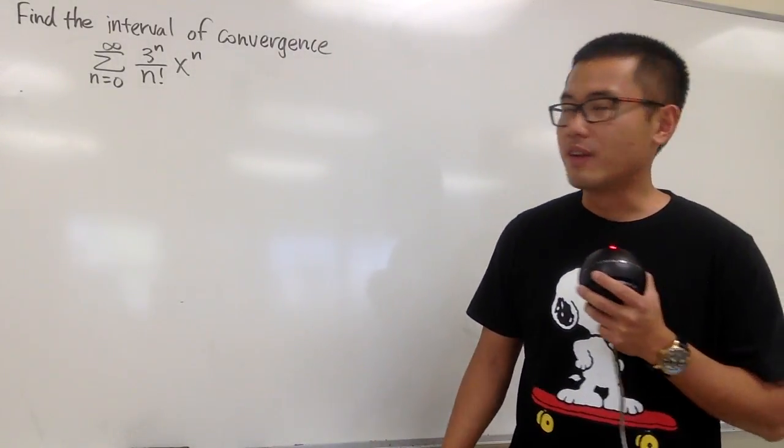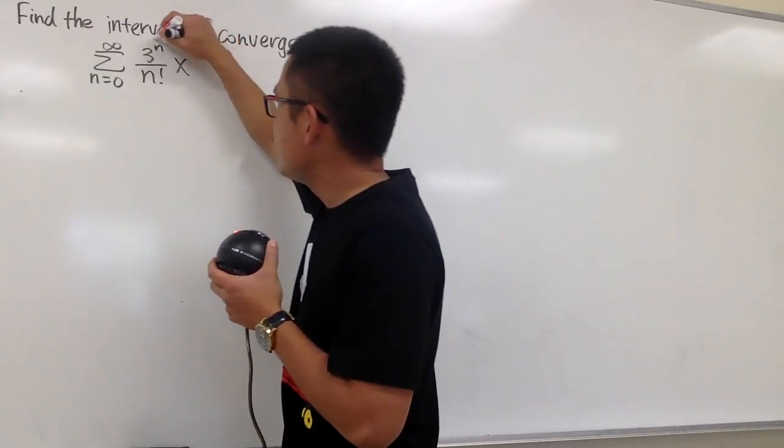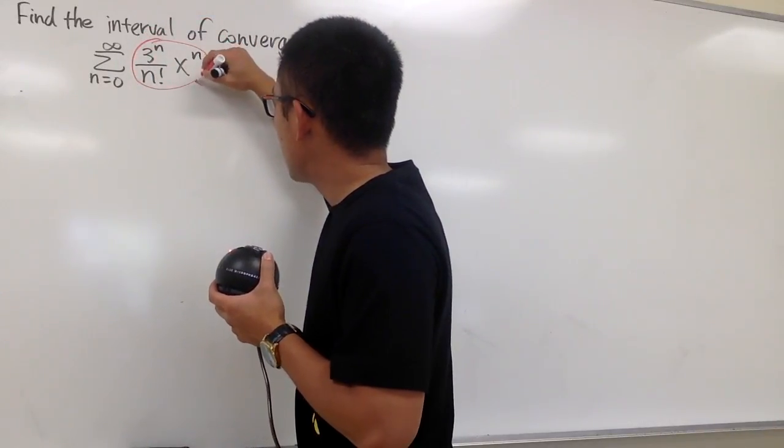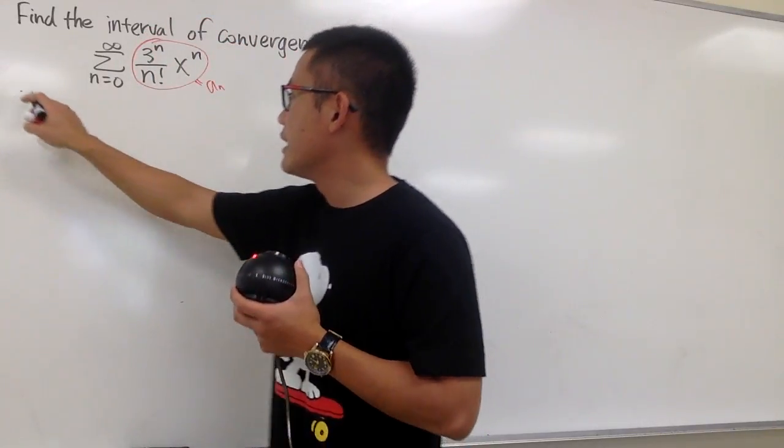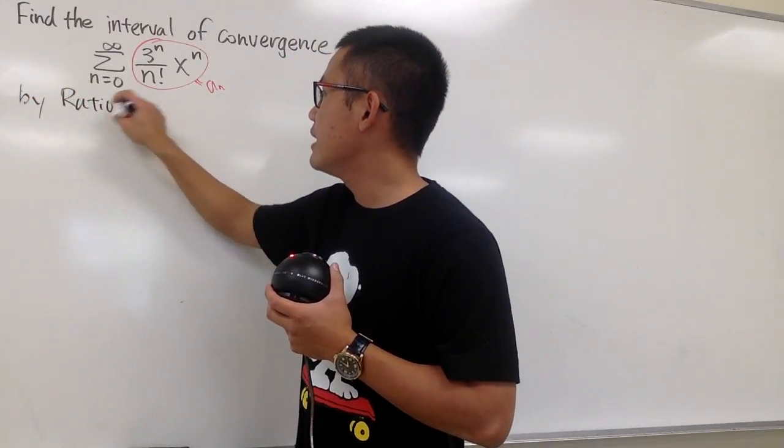Okay, I'm going to show you guys how to find the interval of convergence of this power series by using the ratio test. So let's go ahead and indicate that this right here is our a_n, and we'll be doing this by using the ratio test. So by the ratio test,